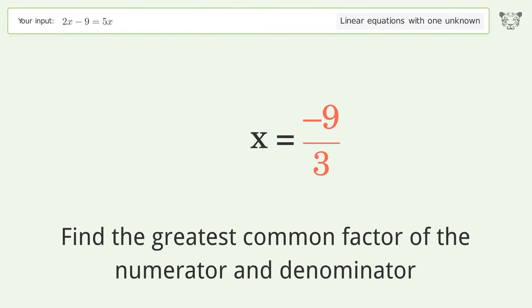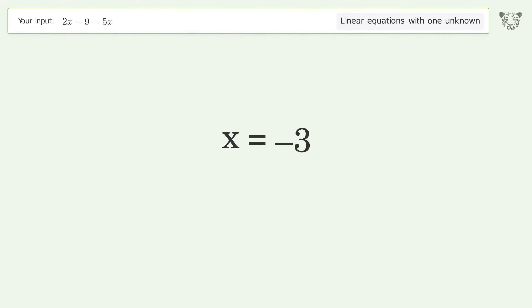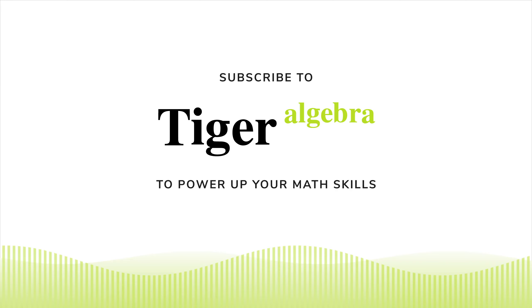Find the greatest common factor of the numerator and denominator. Factor out and cancel the greatest common factor. And so the final result is x equals negative 3.